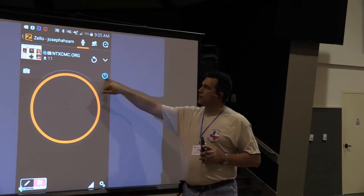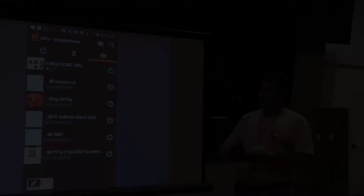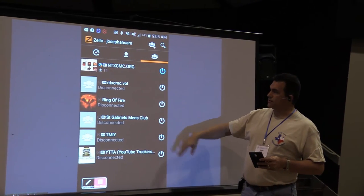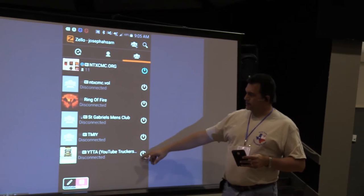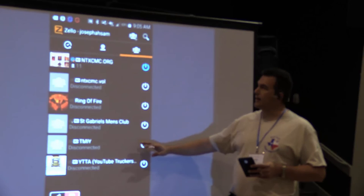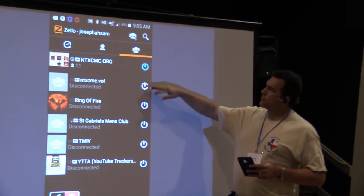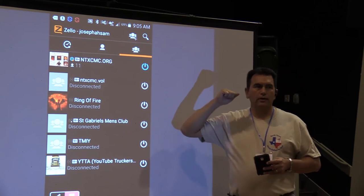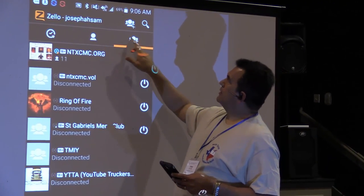While you're on this network, that little blue sign will be on so you'll be able to see it. Here are all the other groups that I have. For example, here's a Ring of Fire, a group I can talk to. St. Gabriel's Men's Club, a test group. There's also the Truckers group. So there's truckers riding down the highway that I can listen to their conversations if I wanted to. Here's the group that you guys will be on, ntxcmc.ball. Once you're in that group, Scott will have to give you a trust relationship once he sees your name in there. Then you can actually talk to everybody in the group. You should be able to hear them.